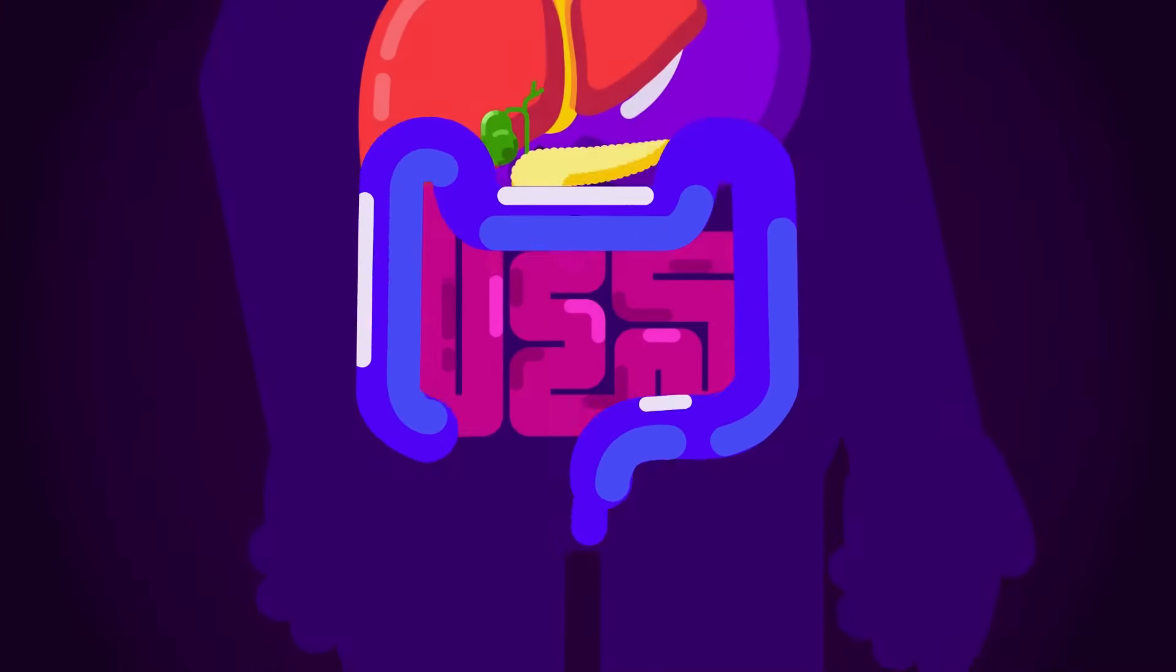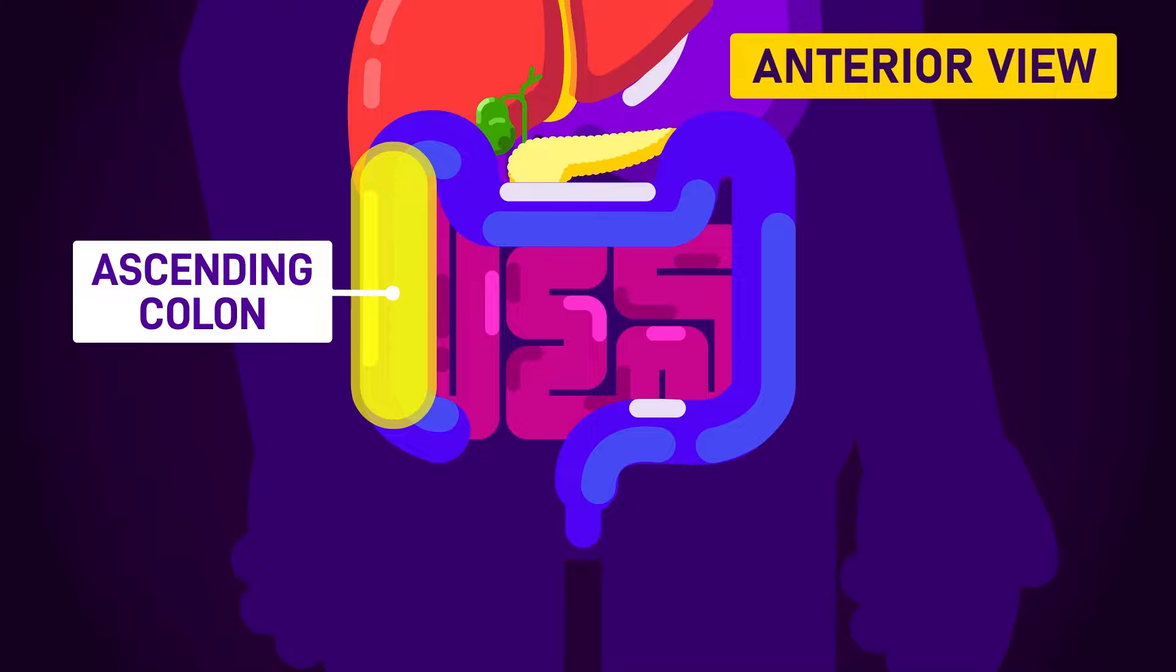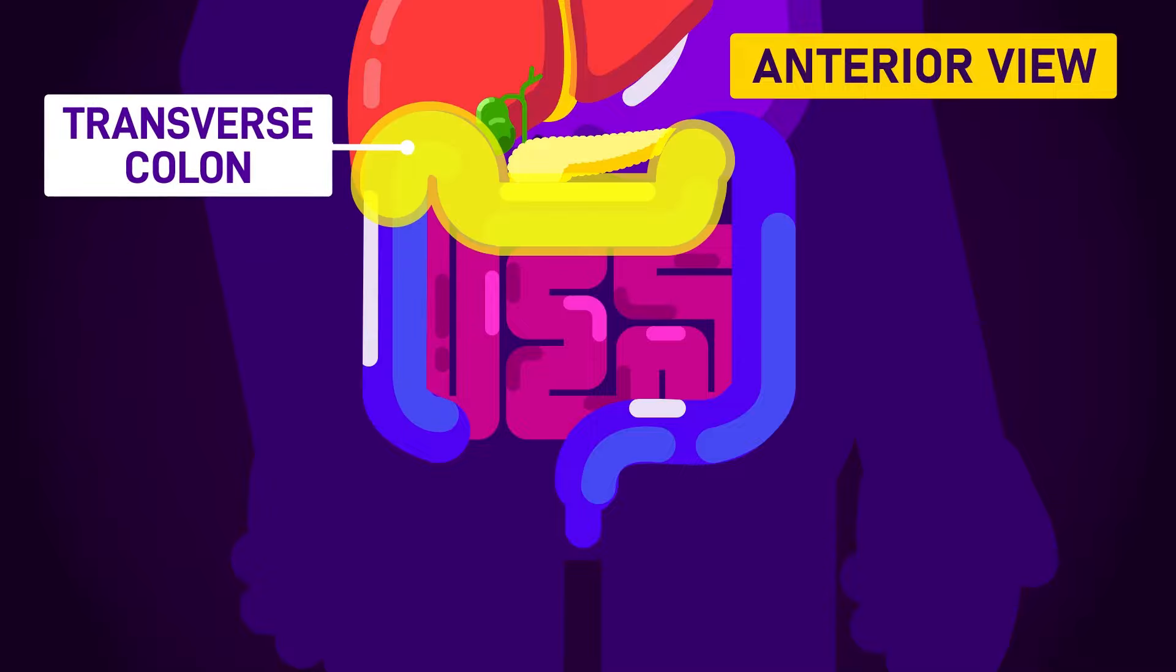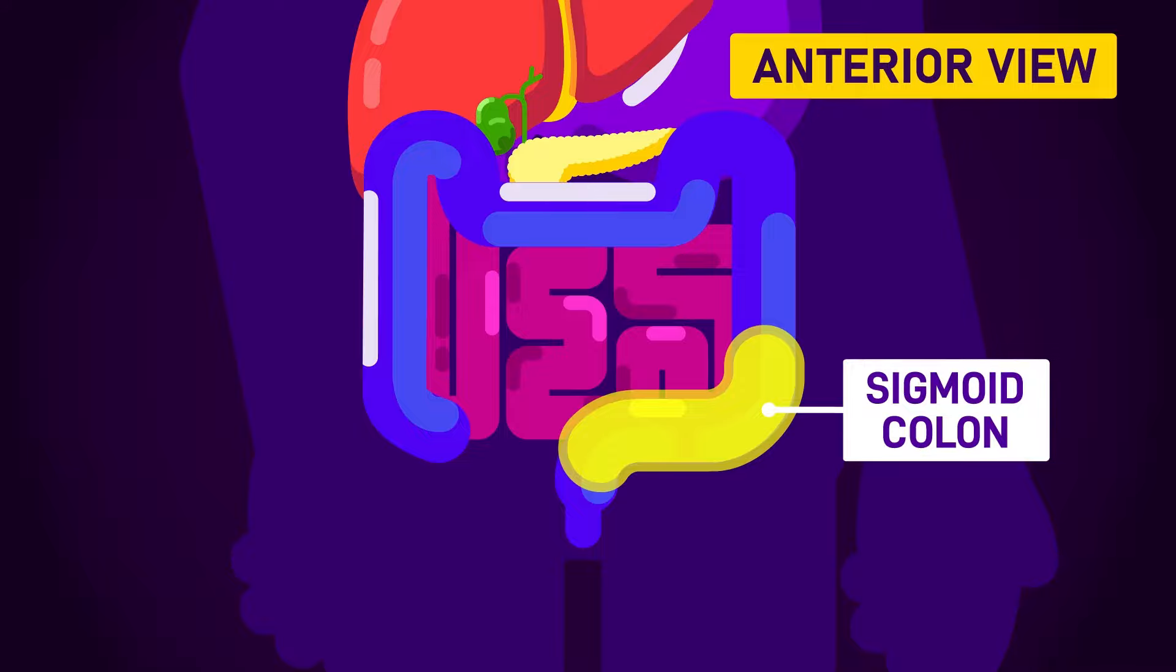It's made up of five sections: the cecum, the ascending colon or right colon, the transverse colon or across colon, the descending colon or left colon, and the sigmoid colon, whose name comes from its S shape, or sigma in Greek.